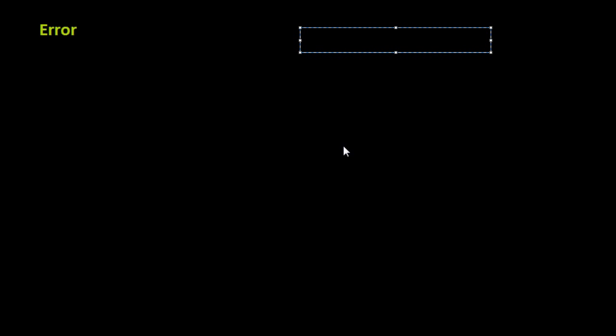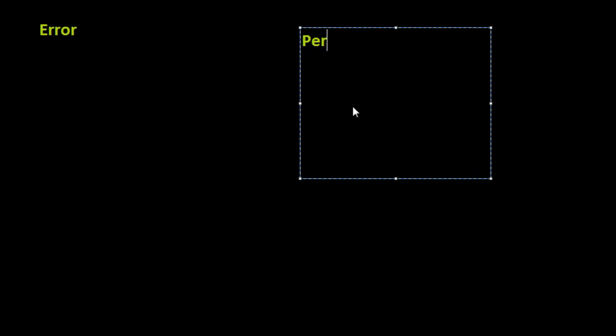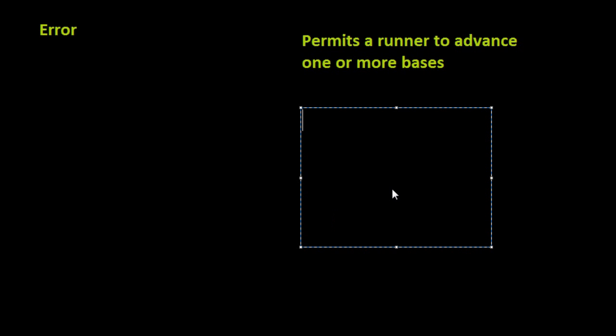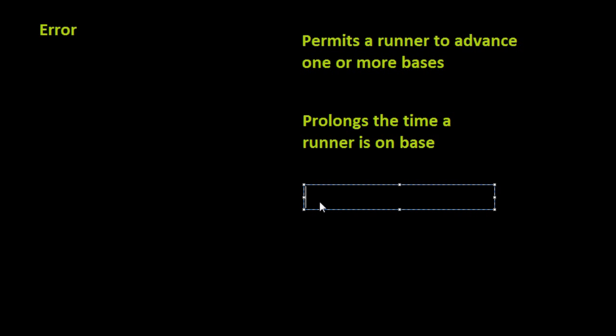The first situation is when an error permits a runner to advance one or more bases that he would not have had if the error was not committed. The second way is that it would prolong the time that a runner is on base. And the third way is that it can prolong the time at bat of a batter.